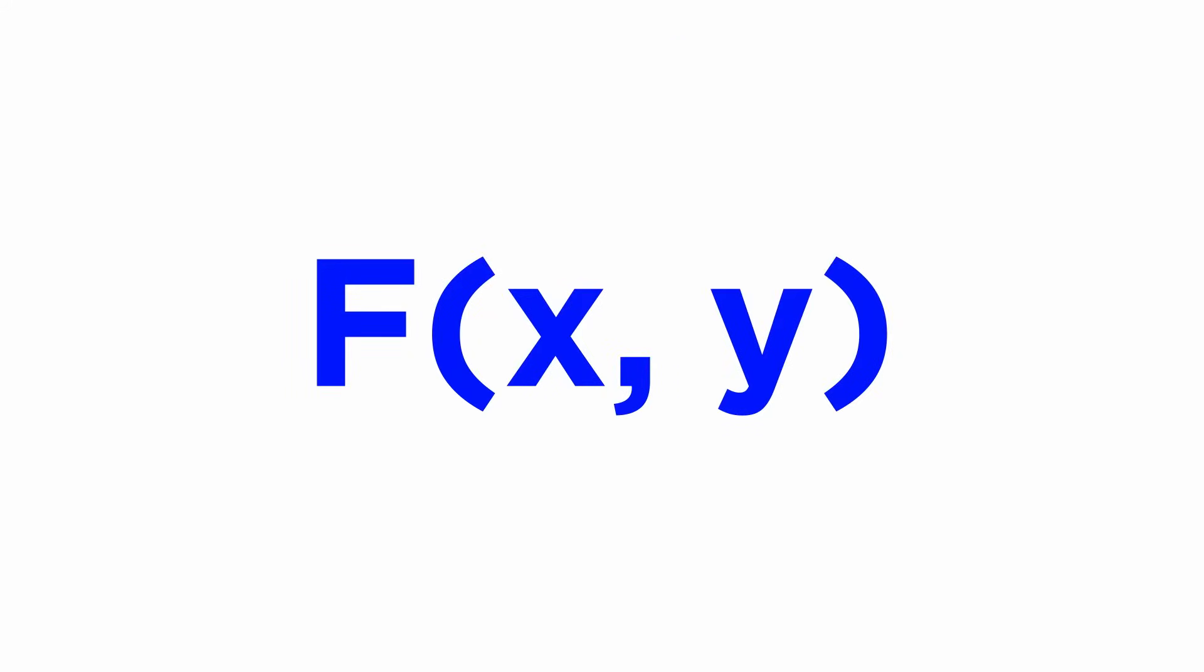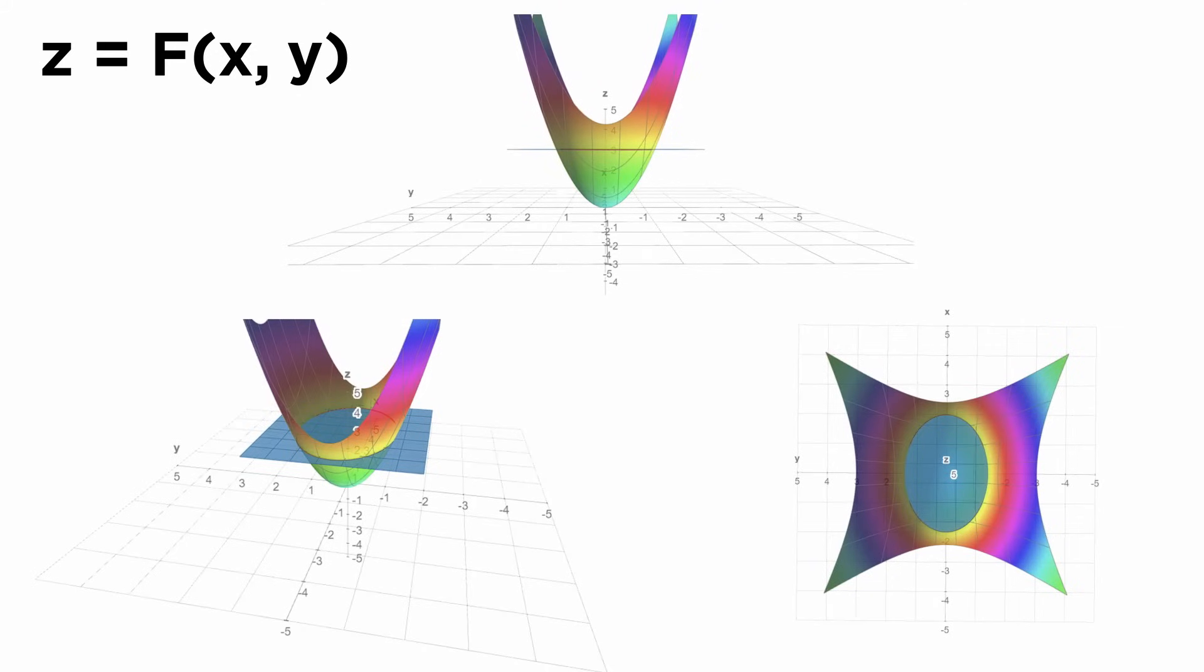Suppose that we have a scalar-valued function of two variables, call it f(x,y). If we plot the function z equals f(x,y) in 3D Cartesian space, we will get a surface, where the elevation above the x,y plane is given by the value of the function f at each point in the plane.